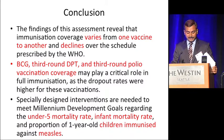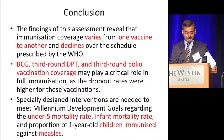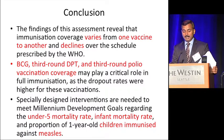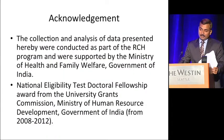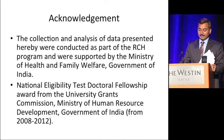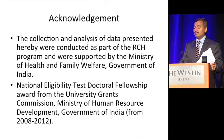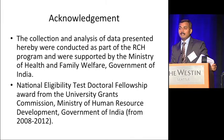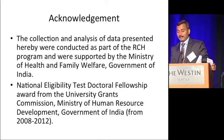Specially designed interventions are needed to meet Millennium Development Goals regarding under-five child mortality rate, infant mortality rate, and proportion of one-year-old children immunized against measles. The BCG, third round of DPT, and third round of polio vaccine coverage may play a critical role in full immunization, as dropout rates were highest for these vaccinations. This data collection and analysis was conducted as part of the RCH program, supported by the Ministry of Health and Family Welfare, Government of India.